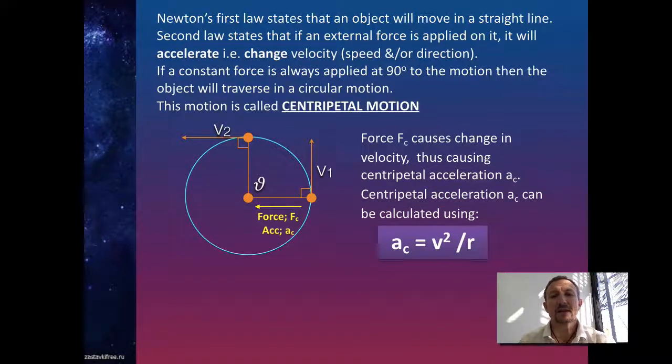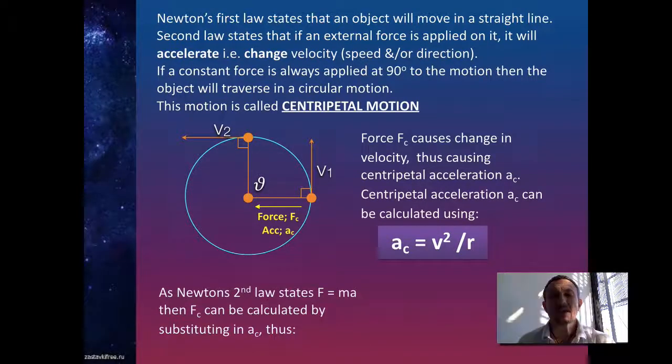Now, we know that centripetal acceleration, the rate at which it changes its speed, can be calculated by V squared over the radius of R, which is the radius of the circle. Then we can apply this into Newton's second law, which is F equals ma.